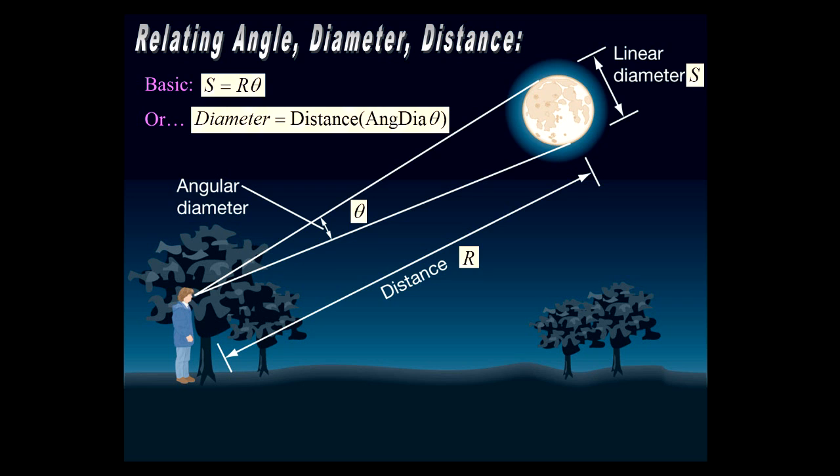And what's wonderful about that is that you can determine distances to objects if you know their size, because you can always measure the angle, or if you know the distance, you can determine the size of a galaxy, a planet, a comet, whatever.